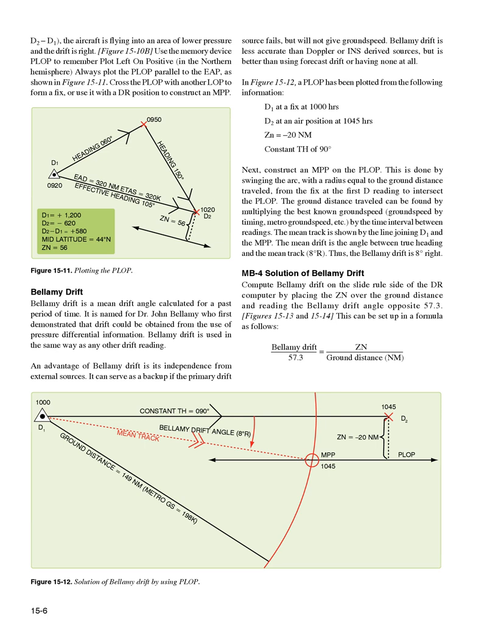Bellamy Drift: Bellamy Drift is a mean drift angle calculated for a past period of time. It is named for Dr. John Bellamy who first demonstrated that drift could be obtained from the use of pressure differential information. Bellamy Drift is used in the same way as any other drift reading. An advantage of Bellamy Drift is its independence from external sources. It can serve as a backup if the primary drift source fails but will not give ground speed. Bellamy Drift is less accurate than Doppler or INS-derived sources but is better than using forecast drift or having none at all.